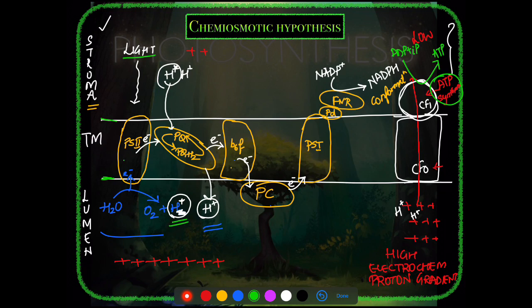PS2 ground state is restored by electrons from water photolysis. Additional protons accumulate in the lumen. PS2 sends the electron to the next in line — Plastoquinone — continuing the non-cyclic electron transport chain.